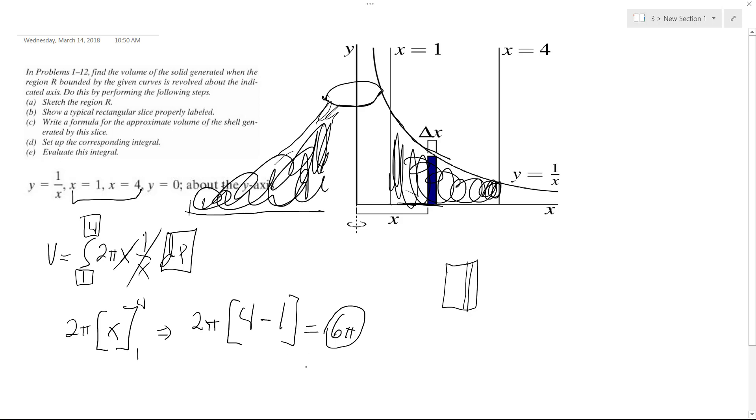Okay. And then 6 pi is equal to approximately like 18.85 or just 18.9.